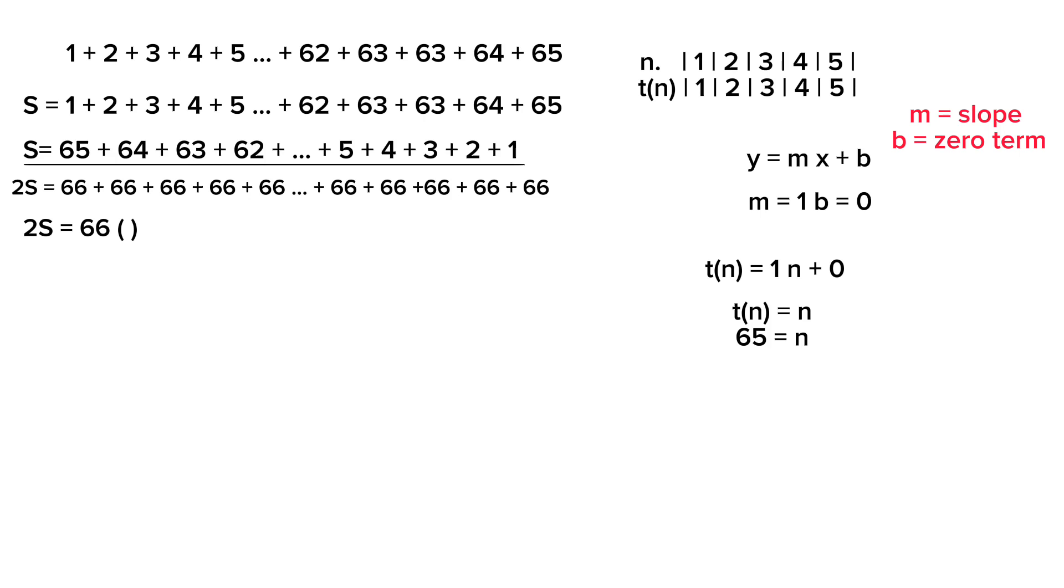We have here our first term, second term, third term, up to 65th term. We can see that the 65th term is equal to n. So n is equal to 65. The total number here is 65.